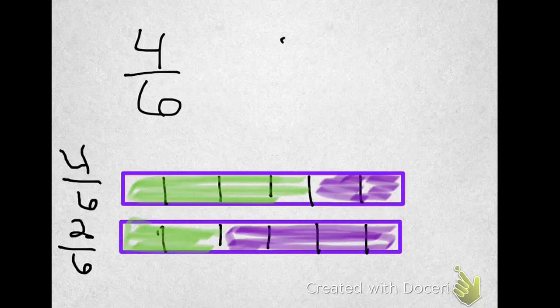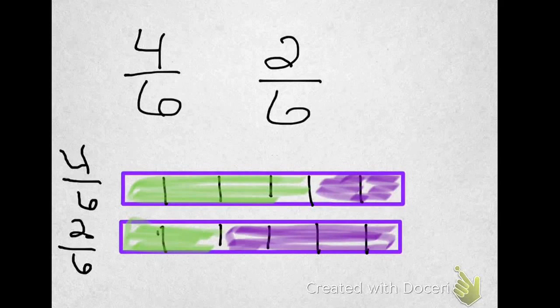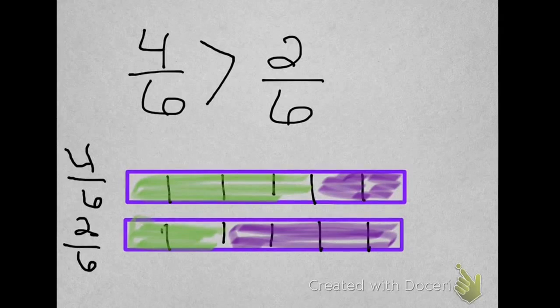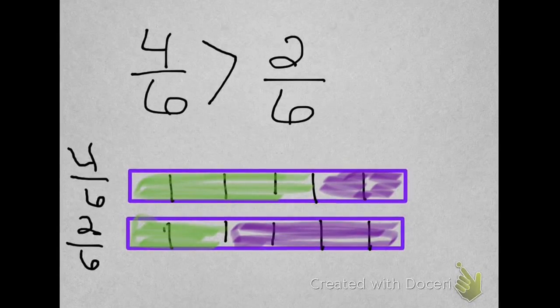We know that the denominators are the same. When the denominators are the same, that's when we have to look at the numerator. The numerator with the bigger number will be the greater fraction. So, 4 sixths is greater than 2 sixths.